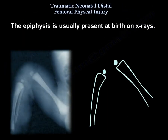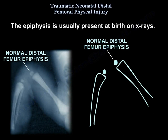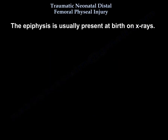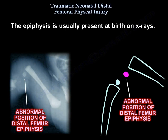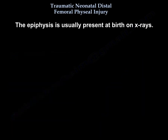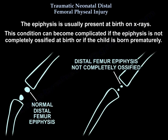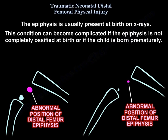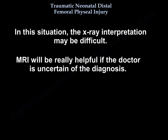The epiphysis is usually present at birth on x-rays. However, this can be complicated if the epiphysis is not completely ossified at birth or if the child is born prematurely. In that situation, x-ray interpretation may be difficult. MRI will be very helpful if the doctor is uncertain of the diagnosis.